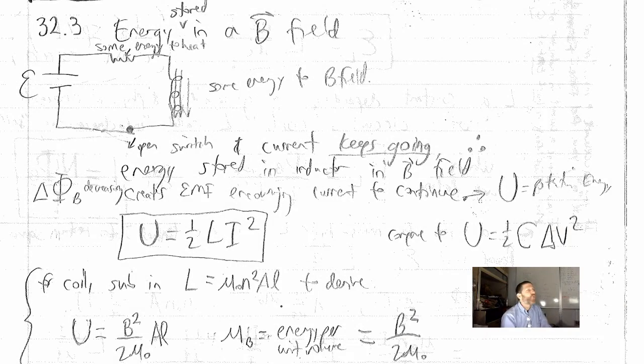Next up is energy stored in a magnetic field. Now you may remember that a capacitor, it's really not storing charge because what's the net charge in a capacitor? Zero. No matter how much charge is on it, it's negative and positive. So it's really net charge of zero on a capacitor.